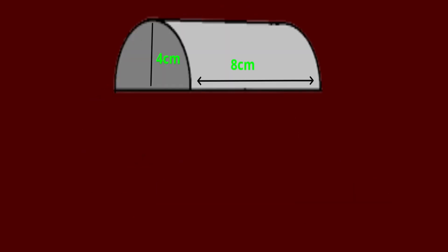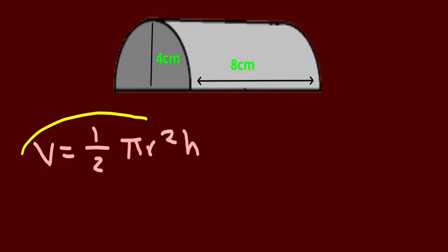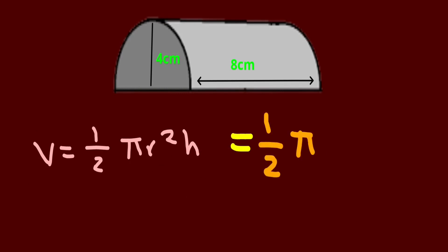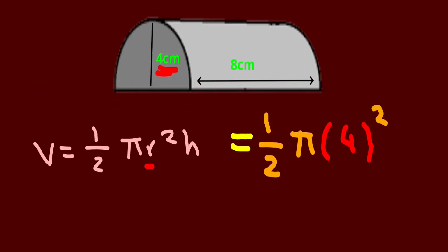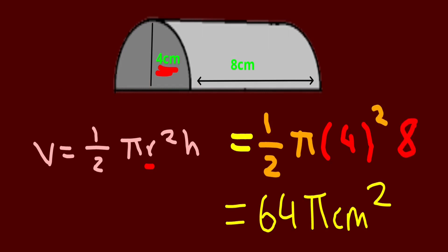So here we have a half cylinder with dimensions of 4cm and 8cm. And by using this formula, we must substitute it. So the radius is 4cm, and we do one half times pi times 4 squared times the height, which is 8cm. The height can also be known as the depth. The overall answer is 64 pi centimeters squared.